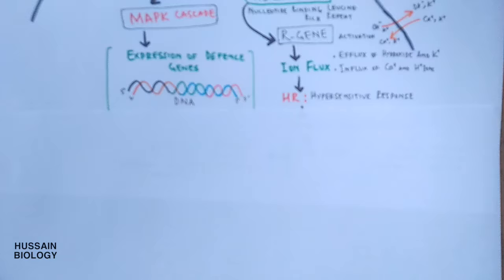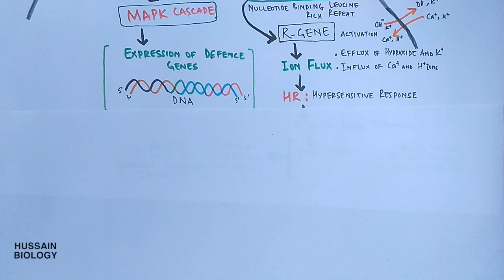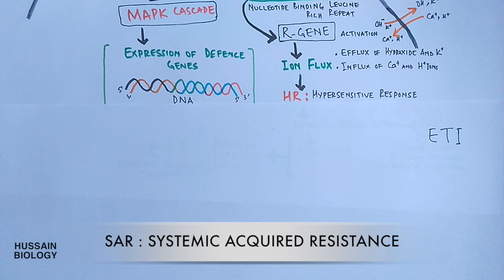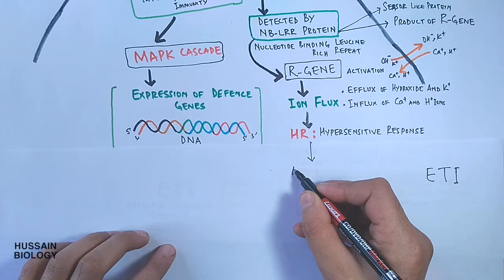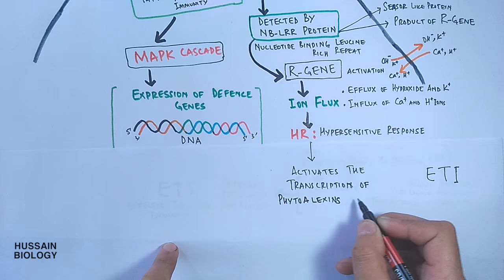In this way, pathogen infection is contained and nearby cells are not infected. This is a short-term response by the plant, but there are other ways to stop the infection as well. The hypersensitive response also triggers other types of ETI; HR induces SAR — that's systemic acquired resistance — which is a more advanced immunity in plants. In systemic acquired resistance, hypersensitive response activates the transcription of certain proteins like phytoalexins and chitinases, and both these compounds degrade the cell wall of fungi.